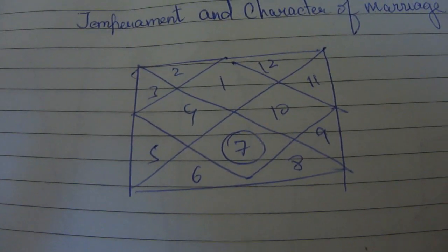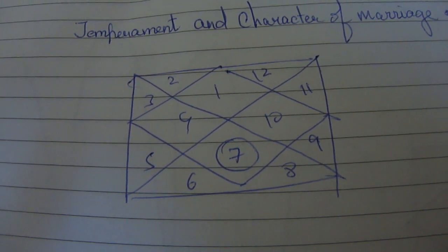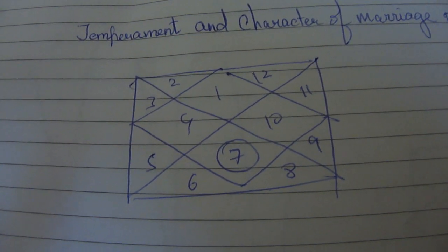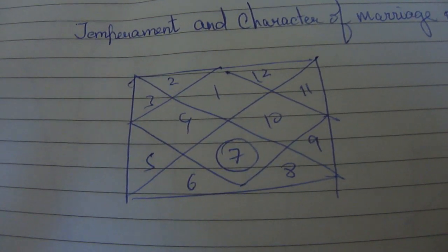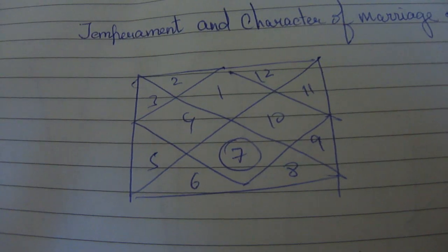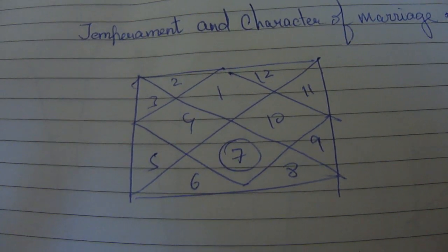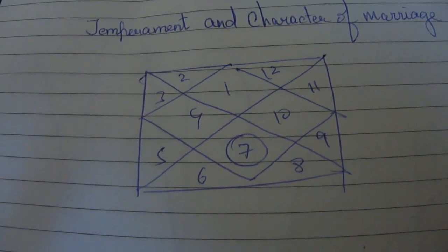Now if the 7th house has the planet Jupiter, you can expect a very generous, optimistic, good natured partner, who is very religious and also a bit status driven, law abiding, respectable and a good partner in general.